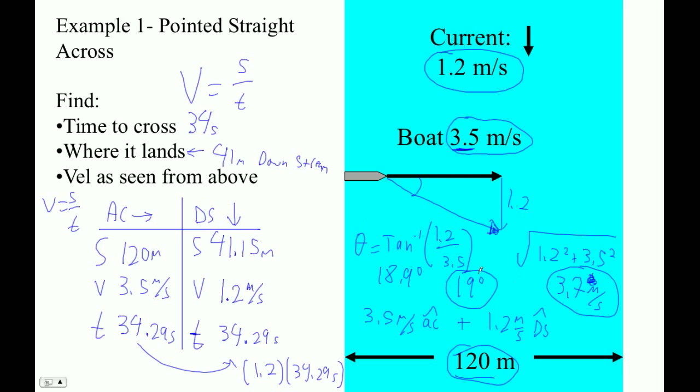So the velocity as seen from above is 19 degrees downstream and 3.7 meters per second as a speed. The boat would, of course, be always pointed across the stream. It would just be moving to the side and across.